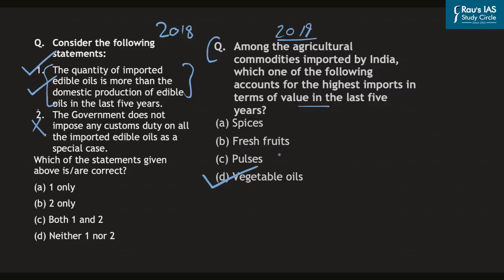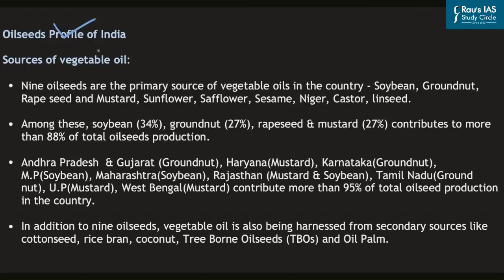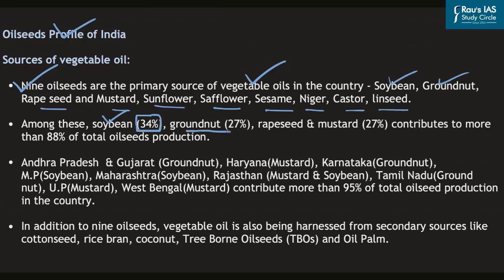There are primarily nine oilseeds that are the primary sources of vegetable oil in India: soybean, groundnut, rapeseed, mustard, sunflower, safflower, sesame, niger, castor and linseed. The highest production is soybean at about 34%, followed by groundnut at about 27%, and then rapeseed and mustard — these three account for about 88% of total oilseed production in India. Key producing states include Andhra Pradesh and Gujarat for groundnut, Haryana for mustard, MP and Maharashtra for soybean, Rajasthan for both mustard and soybean, contributing about 95% of total oilseed production.